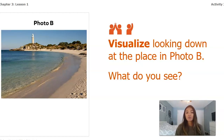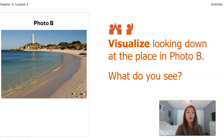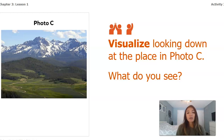Pause the video and visualize looking down at Photo B — look for whether there is high land, water, or low land. Then we're going to do the same thing with Photo C: visualize looking down at that place and think about whether you see high land, very high land, low land, water, and so on.